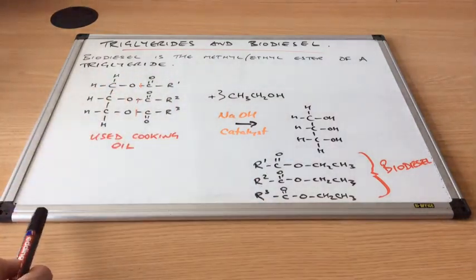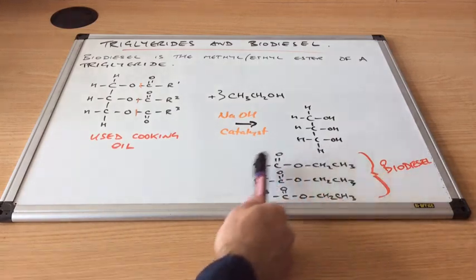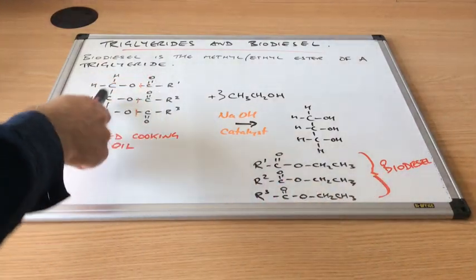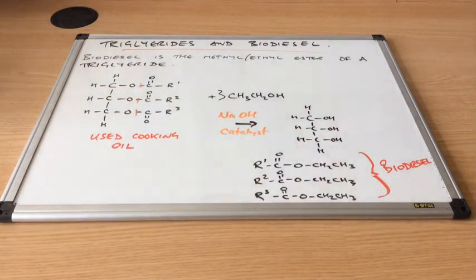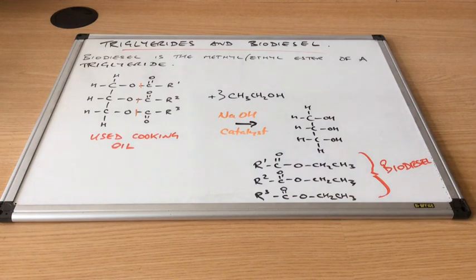So this will be blended with regular diesel and put into vehicles and they can run perfectly well on that. If you think, why do they use ethanol or methanol, these two alcohols are fairly easy to produce. If you think about ethanol, you can make that via fermentation of sugars. So you could harvest some crops that could be then fermented into ethanol and then use it in the process. So it's kind of got some environmental benefits to it. It's a renewable process, if you like.